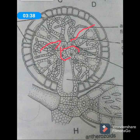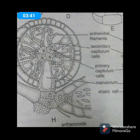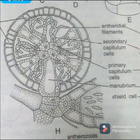Above the secondary capitulum cells, there are two to four long unbranched antheridial filaments, also referred to as spermatogenous filaments. Each of these filaments contains 20 to 250 cells, and each cell forms one antherozoid.